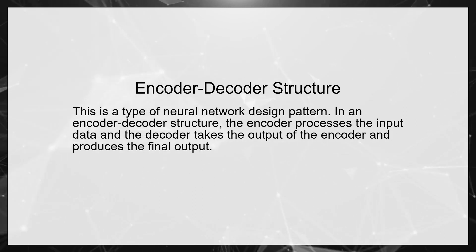Encoder-Decoder Structure. This is a type of neural network design pattern. In an encoder-decoder structure, the encoder processes the input data and the decoder takes the output of the encoder and produces the final output.